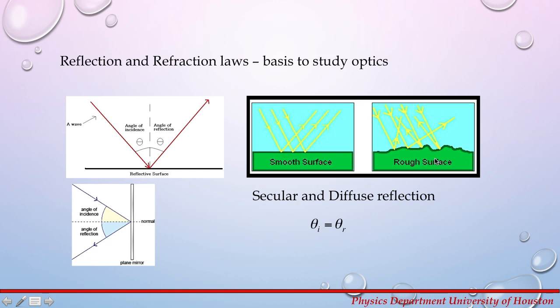The reflectivity and reflectance of a surface material is the fraction of the energy of the oncoming wave that is reflected by it. The reflectivity of a mirror, for example, is close to 1.